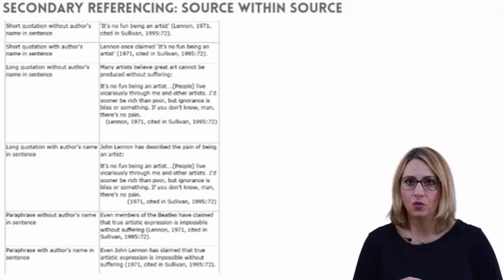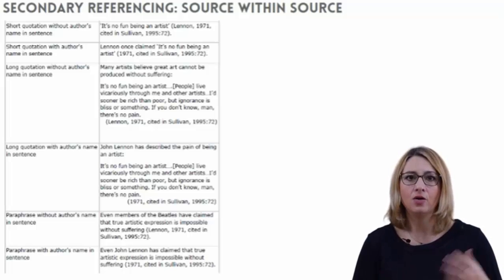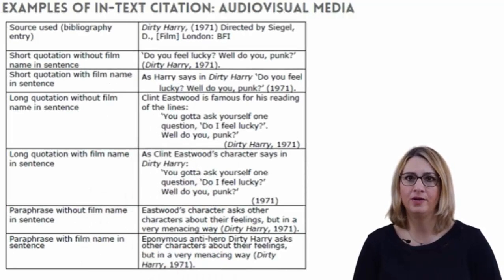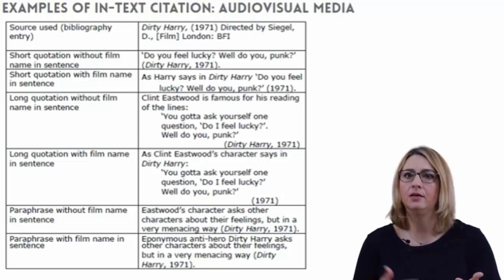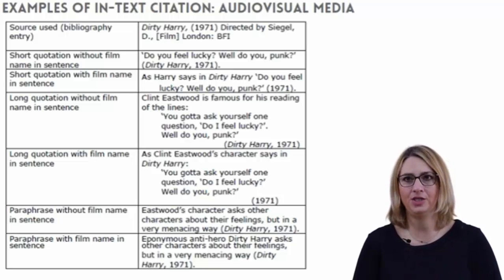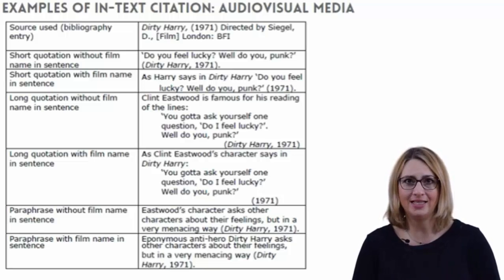When citing a source within a source, in your bibliography you should only cite the book that you have actually read, according to the rules for that type of source. You must include the date of the original source in your in-text citation. Films do not have an author in the usual sense, so the title may be used instead. However, if you are citing the work of a particular person — the director, performer, cinematographer, etc. — you can cite them instead and forget about page numbers. You would only quote from a film if you were directly quoting dialogue, in which case you would also need to quote the name of the character who is speaking.